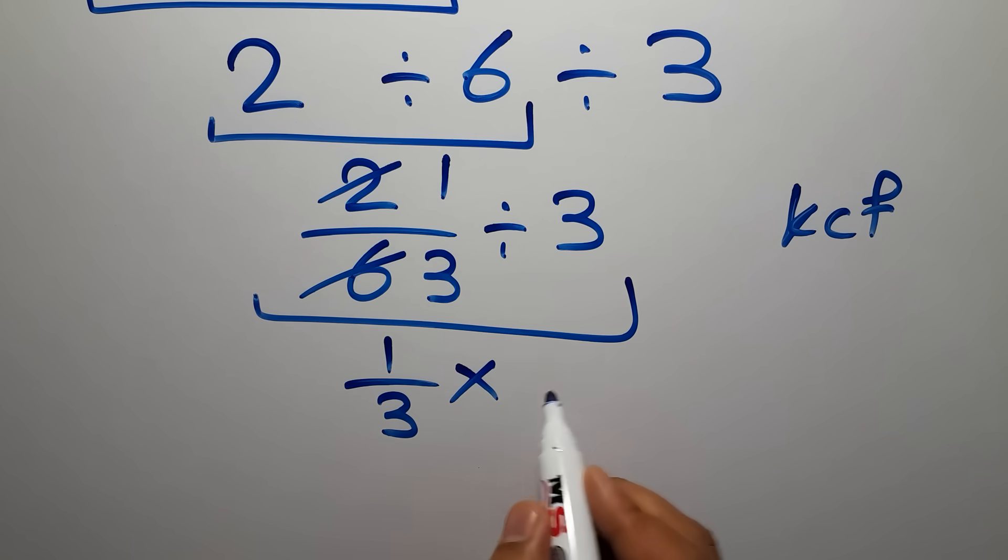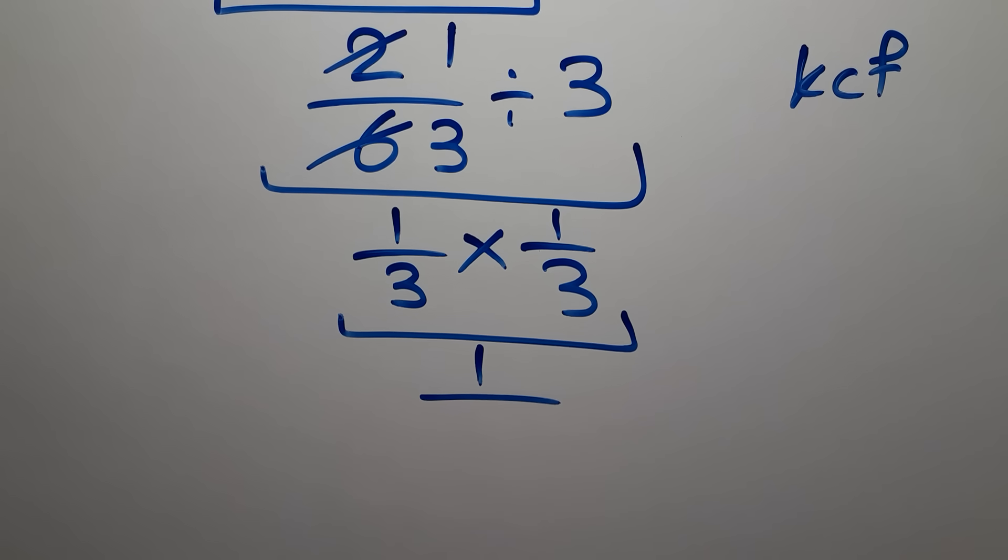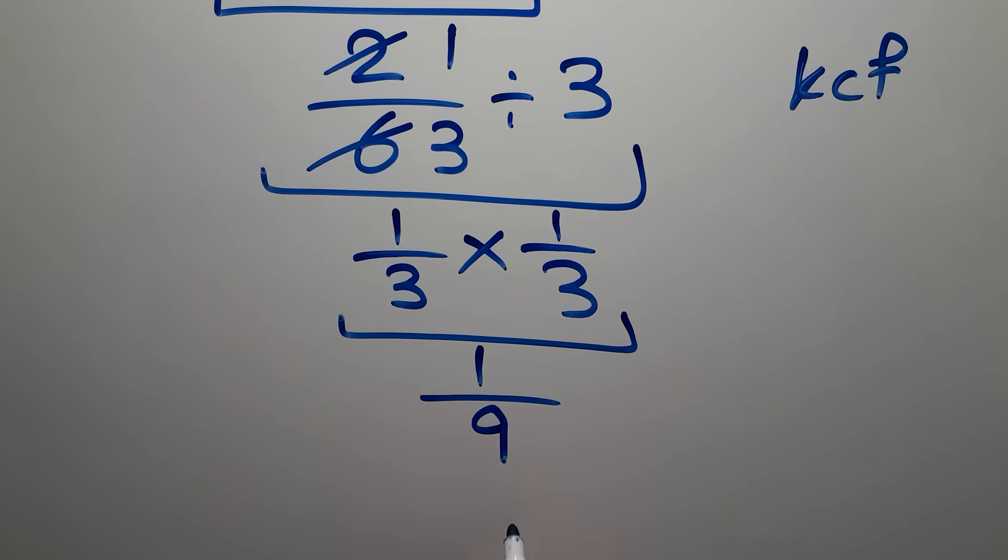So we have 1 over 3 times 1 over 3, which equals 1 over 9. 3 times 3 gives us 9. So we have 1 over 9, and this is our final answer to this problem.